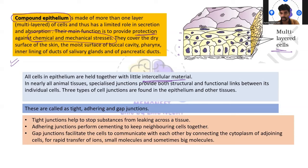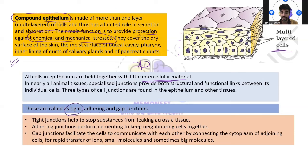In nearly all animal tissue, there will be a presence of specialized junctions, which provide both structural and functional links between individual cells. There are three types of cell junctions found in epithelium and other tissues. One is tight junction, the second is adhering junction, and the third is gap junction. This concept is very important.